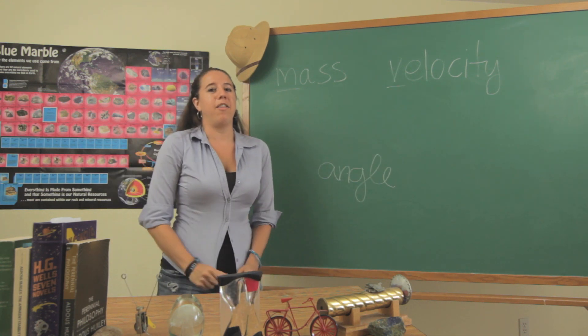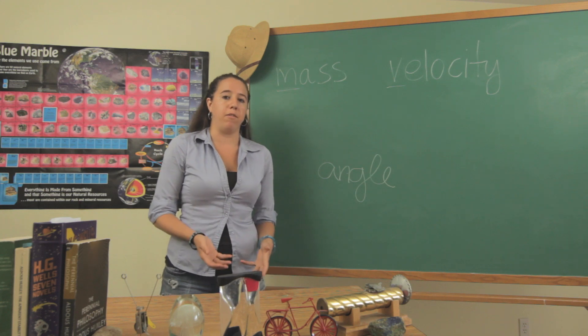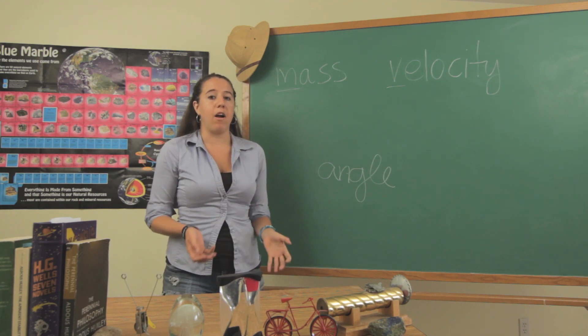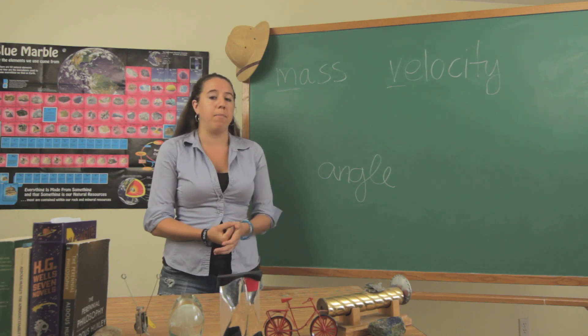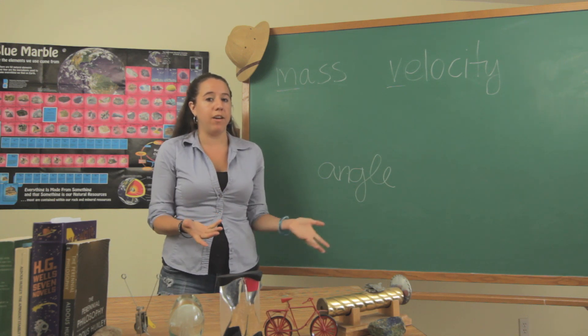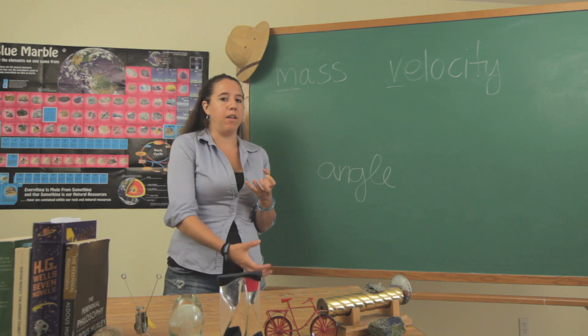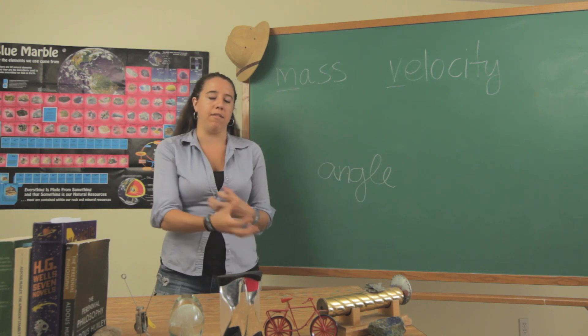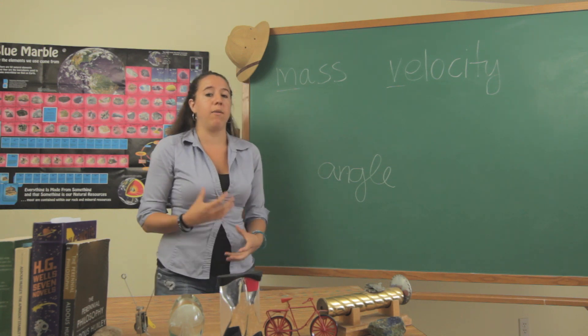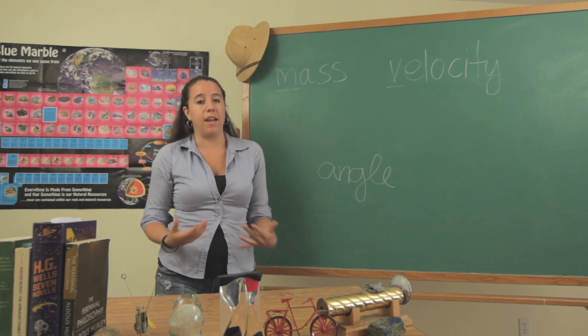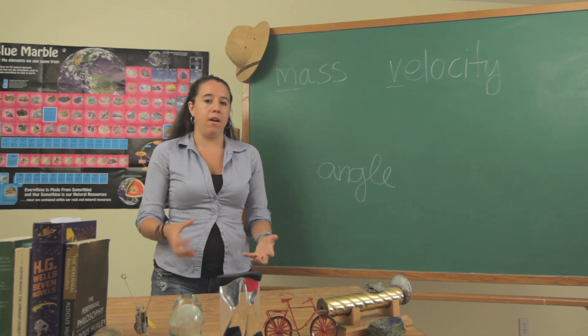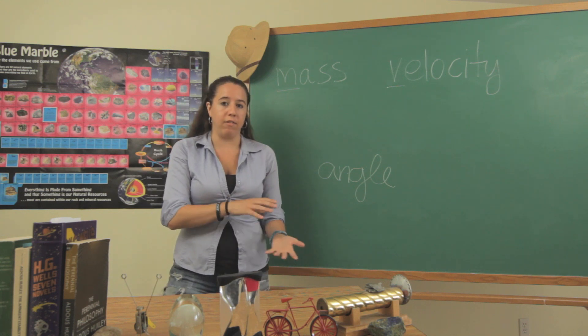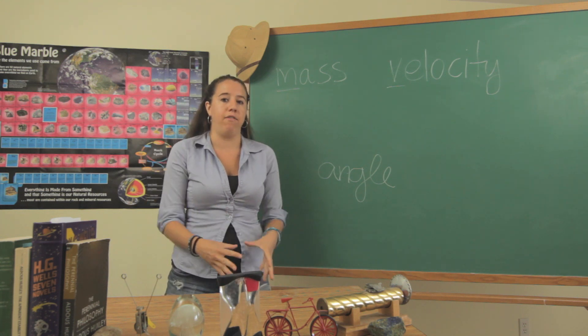So it turns out that physicists constantly run into this problem where they want to figure out how much destructive power a moving object has, and that depends on the mass and the velocity, but you have to take them into account in slightly different proportions. So they've come up with this quantity called kinetic energy that will allow them to directly compare different objects of different sizes and speeds and how much raw destructive power they have.